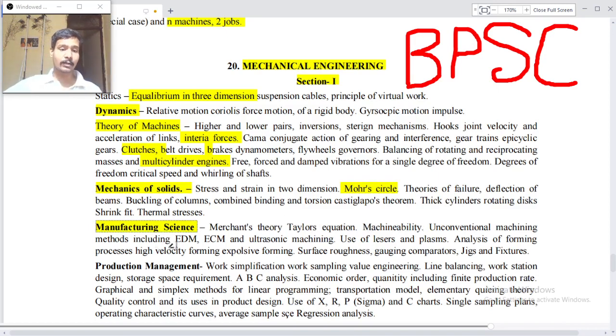Unconventional machining methods including EDM, ECM, and ultrasonic machines. Use of lasers and plasma. Analysis of forming processes, high velocity forming, explosive forming, surface roughness, gauging, comparators and jigs and fixtures.